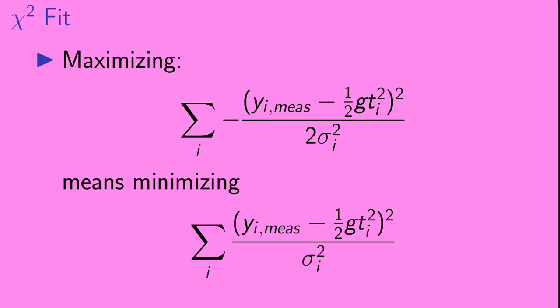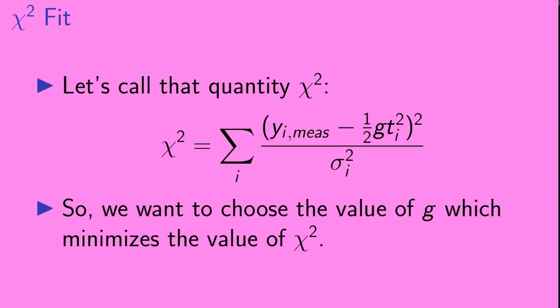Okay, here we have that sum from the previous page that we want to maximize. It has a factor of minus one-half in it. Maximizing this sum is the same as minimizing that same sum with the minus one-half removed. So let's do that. So now we want to minimize the sum shown at the bottom of this slide. Okay, so let's call that quantity chi-squared. So what we want to do is choose the value of g which minimizes the value of chi-squared.